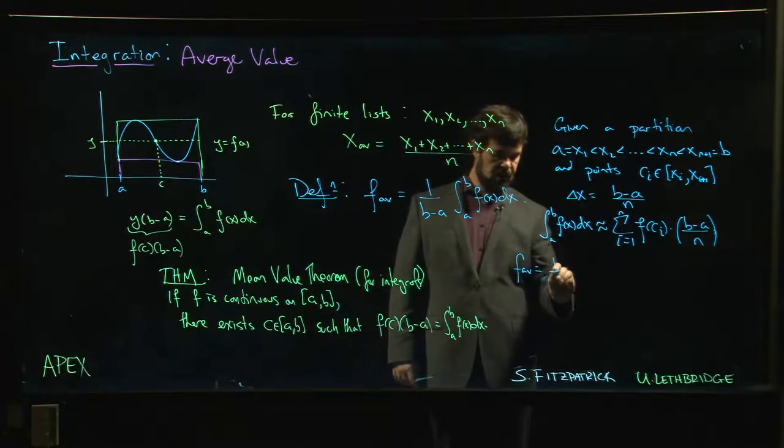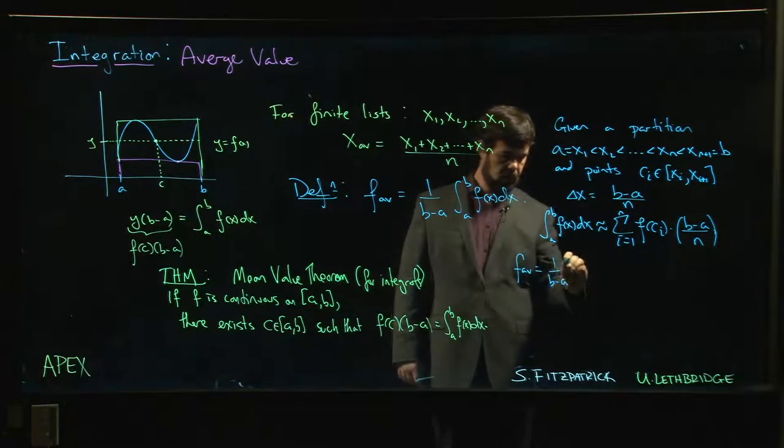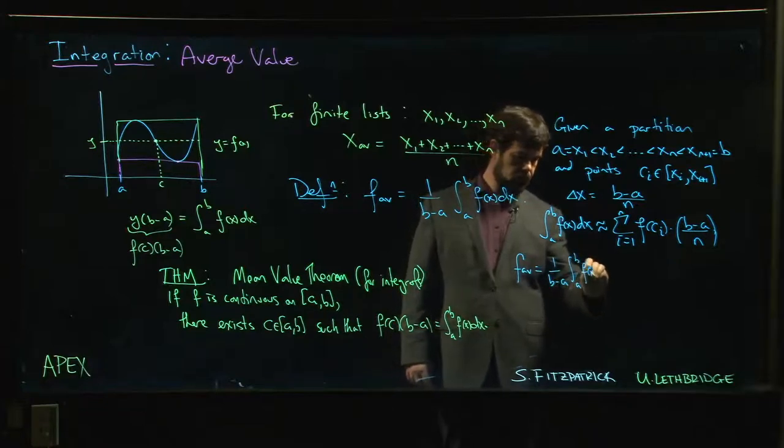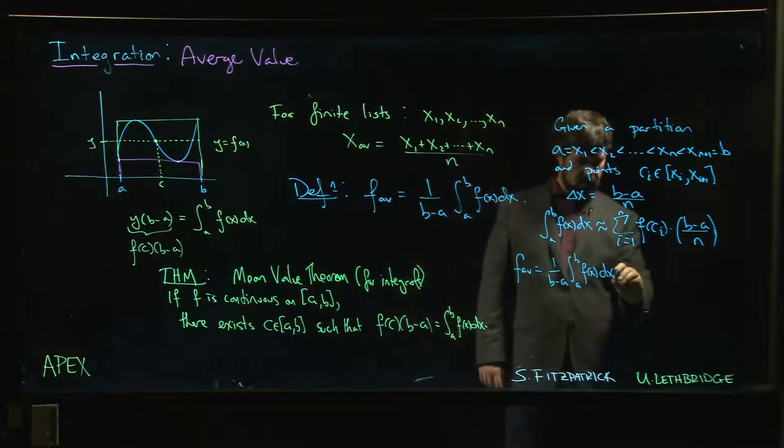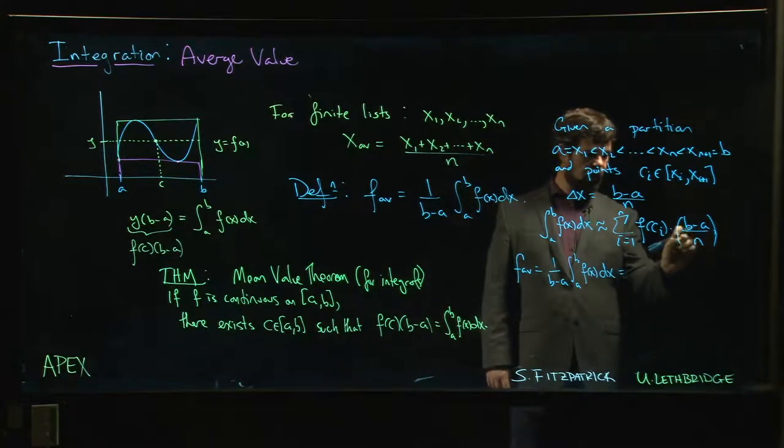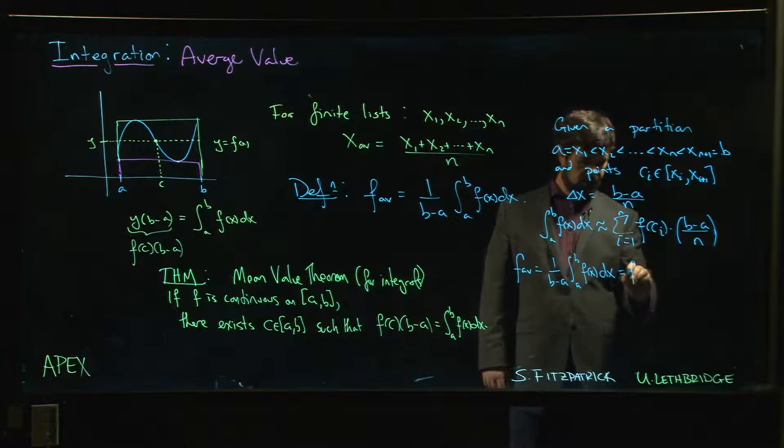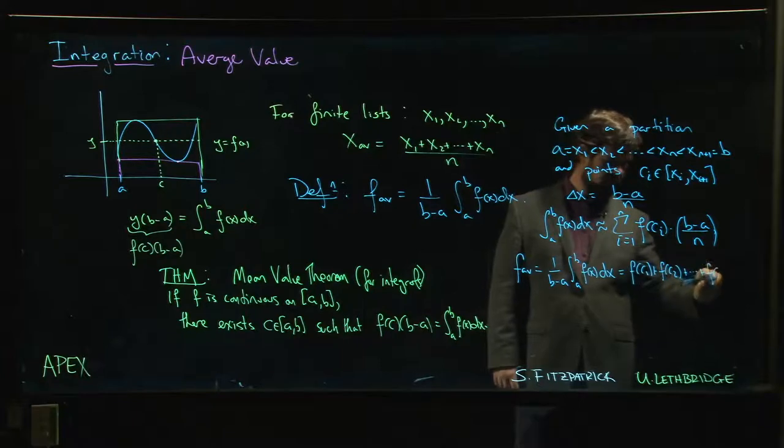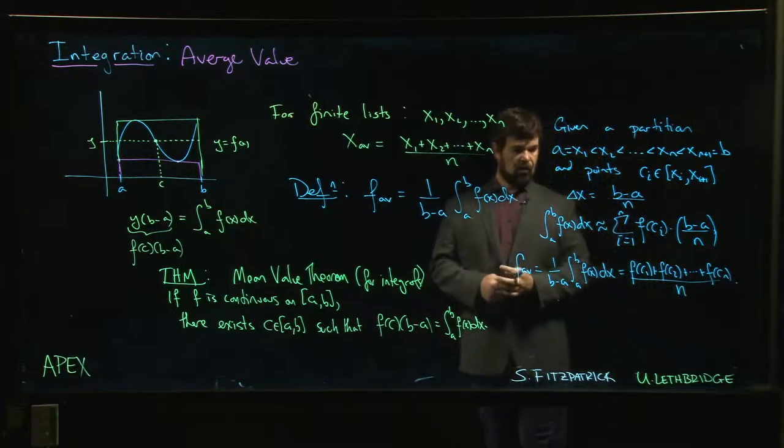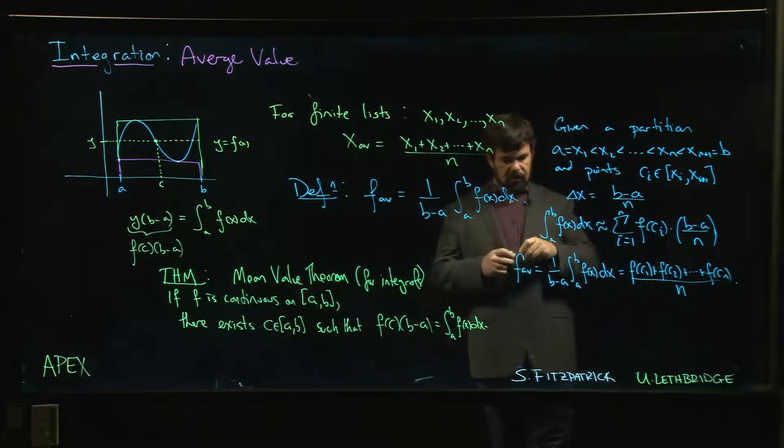That gives us the average, or what we want to think of as average. And what do we have? Well, the (b - a) is gone now. You just have 1/n times this sum. What you have is [f(c_1) + f(c_2) + ... + f(c_n)]/n.